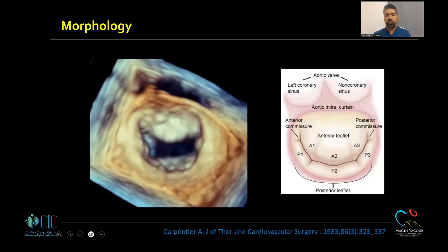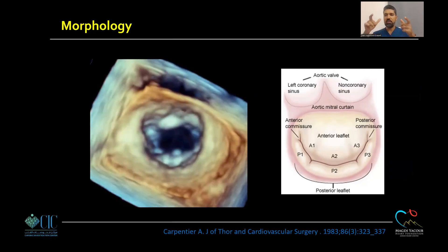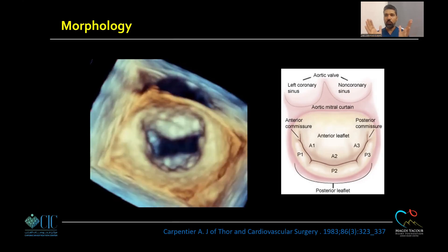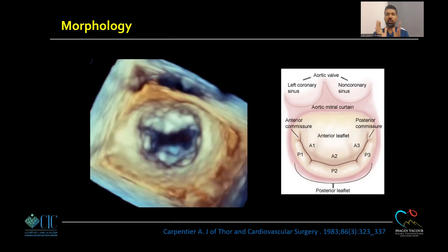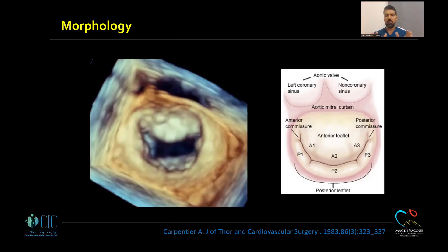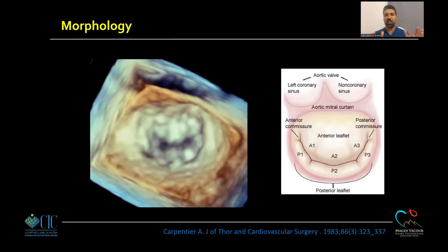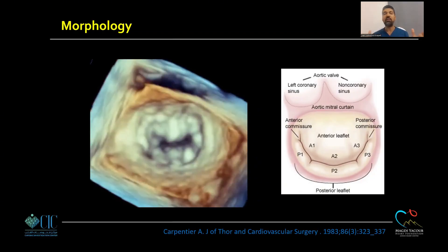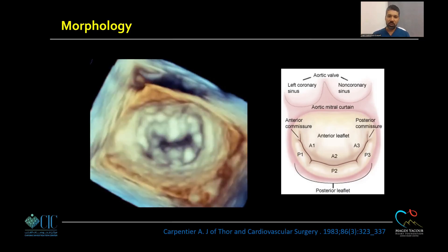Mitral valve anatomy is very complex. The mitral valve is not only about the leaflets — it includes the leaflets, annulus, chordae, papillary muscles, and even the LV wall carrying the papillary muscles as part of the mitral valve apparatus. To have a properly functioning mitral valve, you need healthy components as well as harmonic action, because if the LV wall is weak and dilated, even if the leaflets and annulus are normal, the mitral valve will have regurgitation.